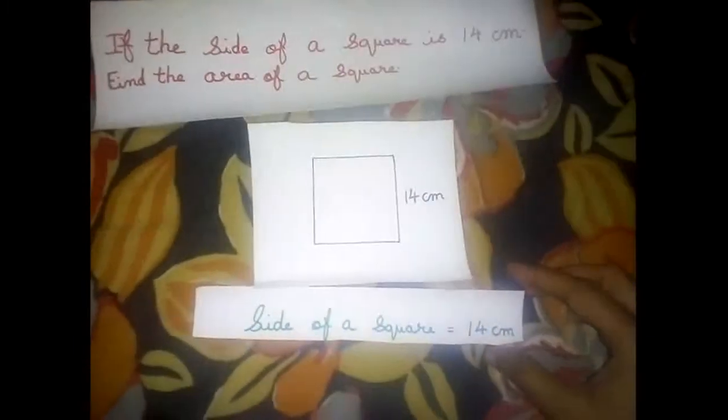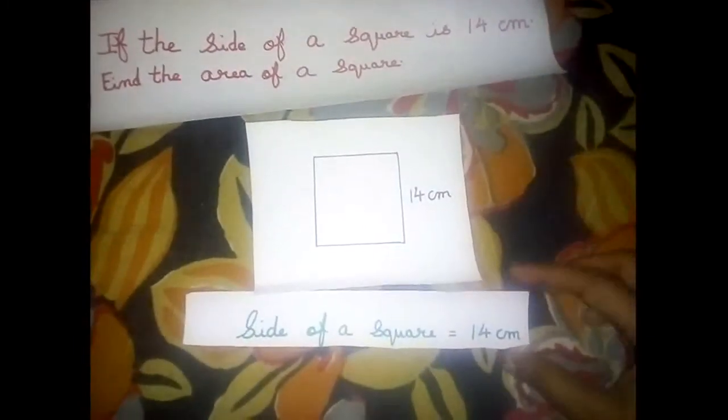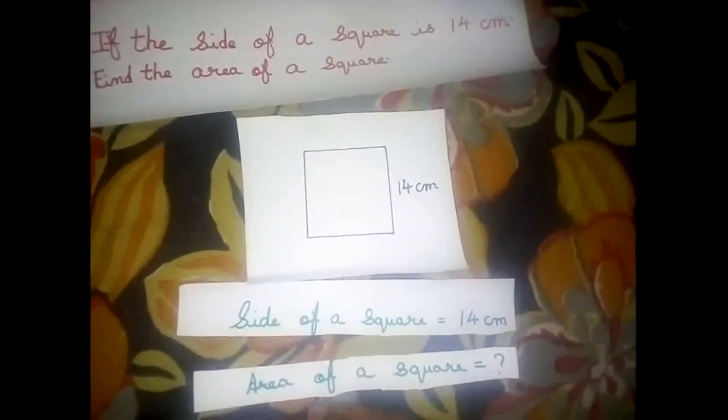Side of a square is equal to 14 cm. To find area of a square.